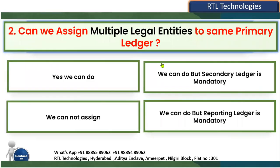Now we are on the second question. We know we are working with the enterprise structure hierarchy. Within the ledger, we have legal entities as the top logical organization. The question is: can we assign multiple legal entities to the same primary ledger?